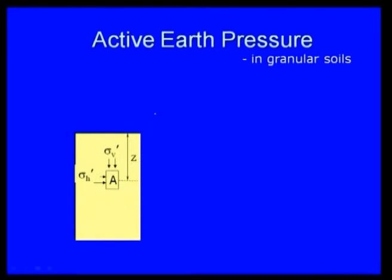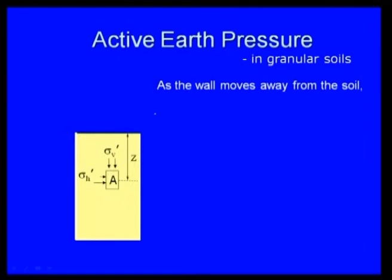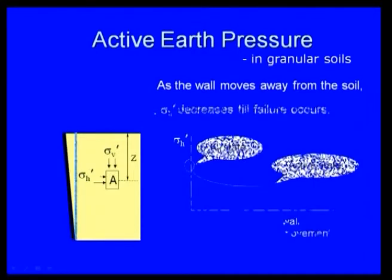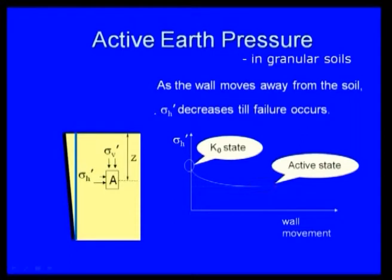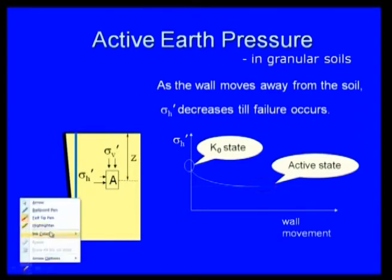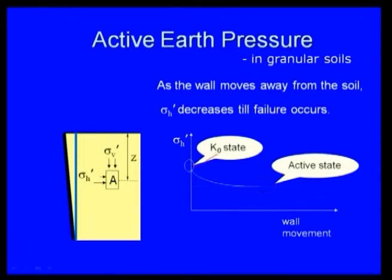For granular soil, the active earth pressure distribution: as the wall moves away from the soil, it starts in the K0 state — earth pressure at rest condition. Then sigma H decreases until failure occurs and remains at the active state value. Beyond that there is no further movement. This gives the active state pressure distribution along the wall.